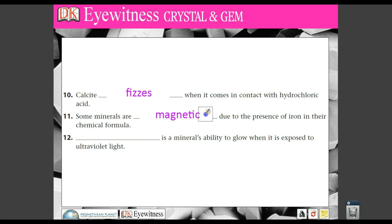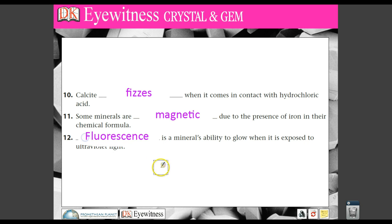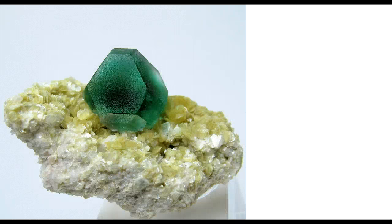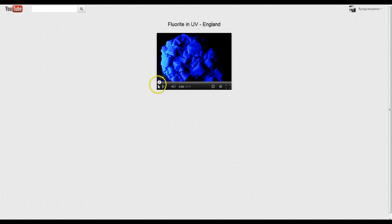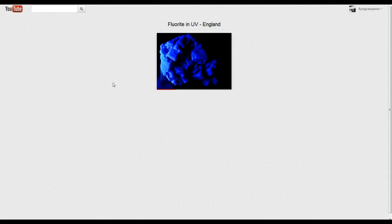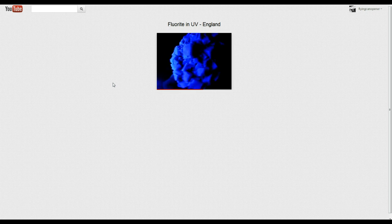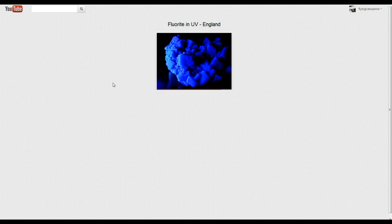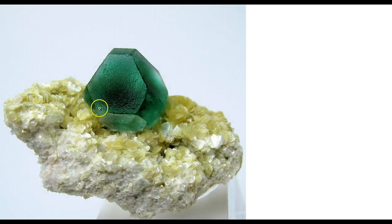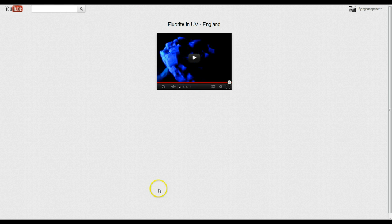Now, some minerals are magnetic due to the presence of iron in their chemical formulas. Not all metals are magnetic, but all magnetic items are metals — they usually have some form of iron and magnetic forces act upon them. Finally, fluorescence is a mineral's ability to glow when exposed to ultraviolet light. For example, fluorite has a green glow under normal light. Watch what happens whenever we expose fluorite to an ultraviolet light — it glows. If you put a black light over fluorite, it will show a different color. This is what it looks like under regular light, and this is what it looks like in ultraviolet light.